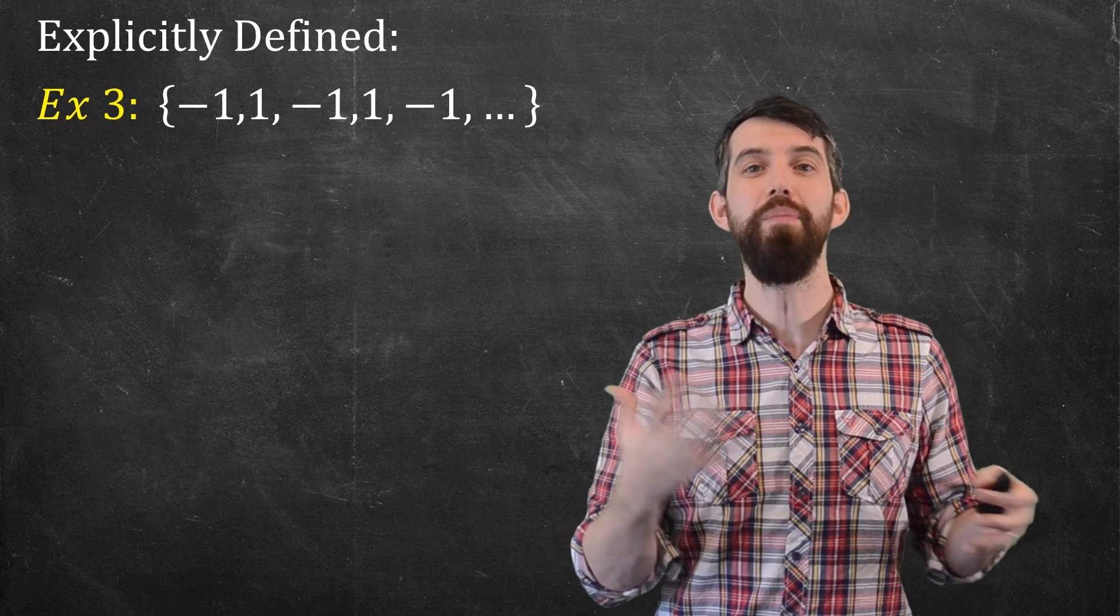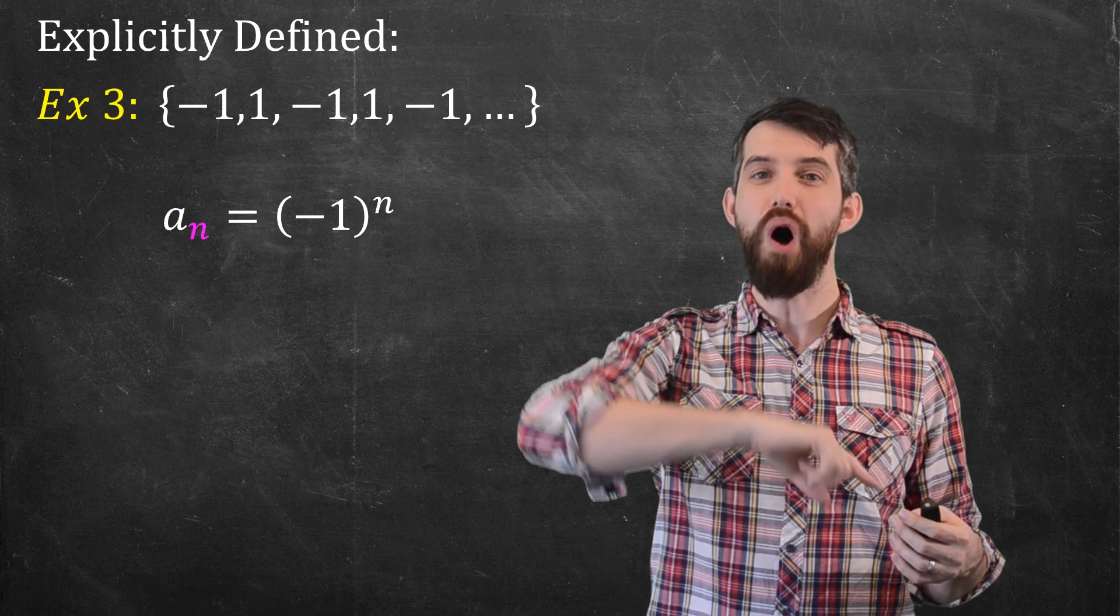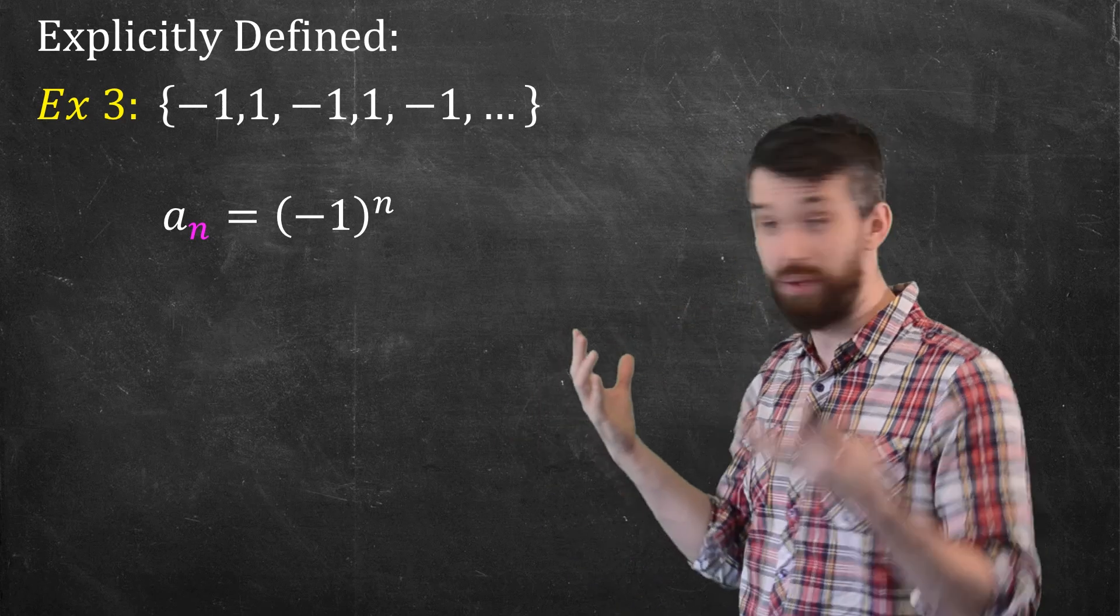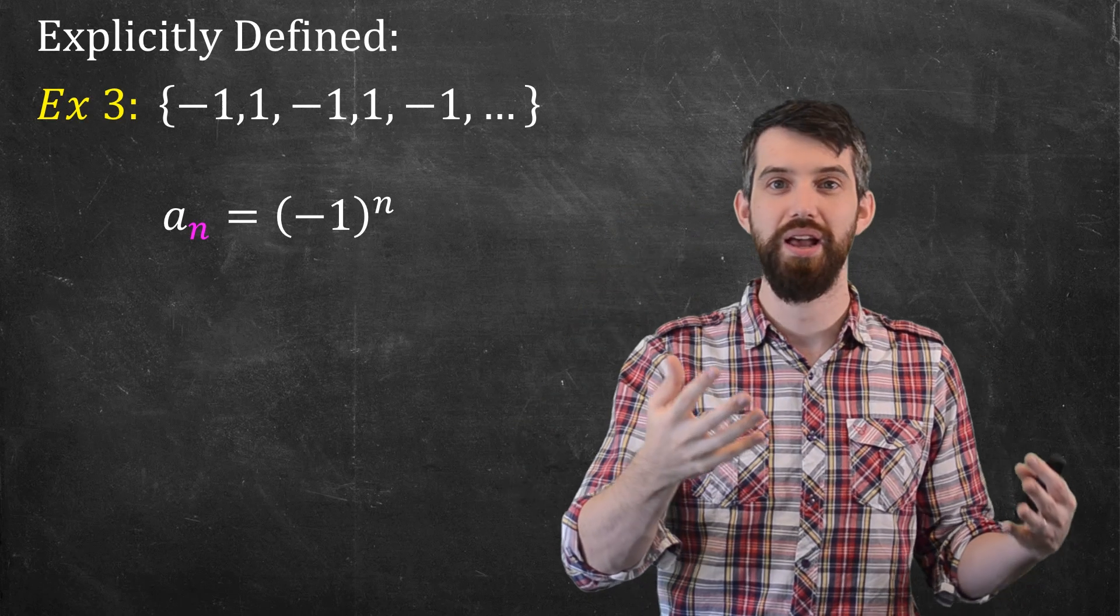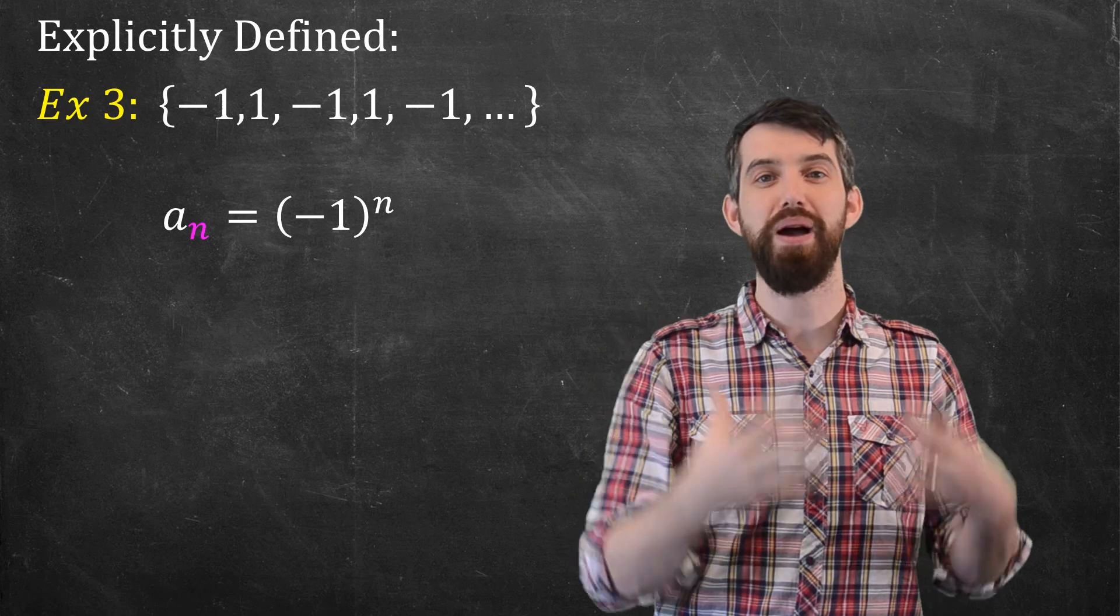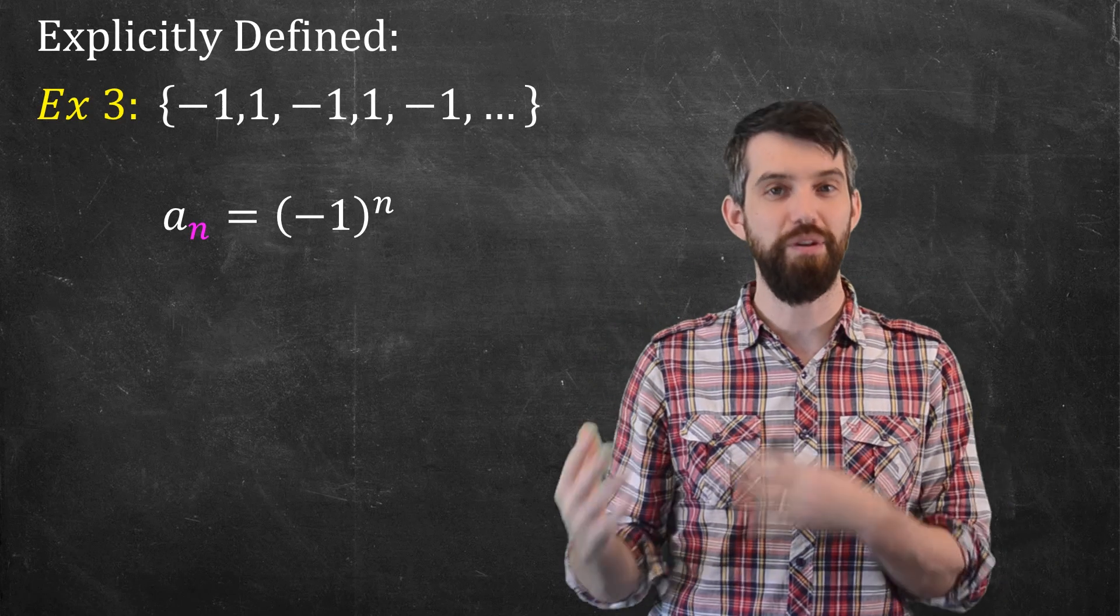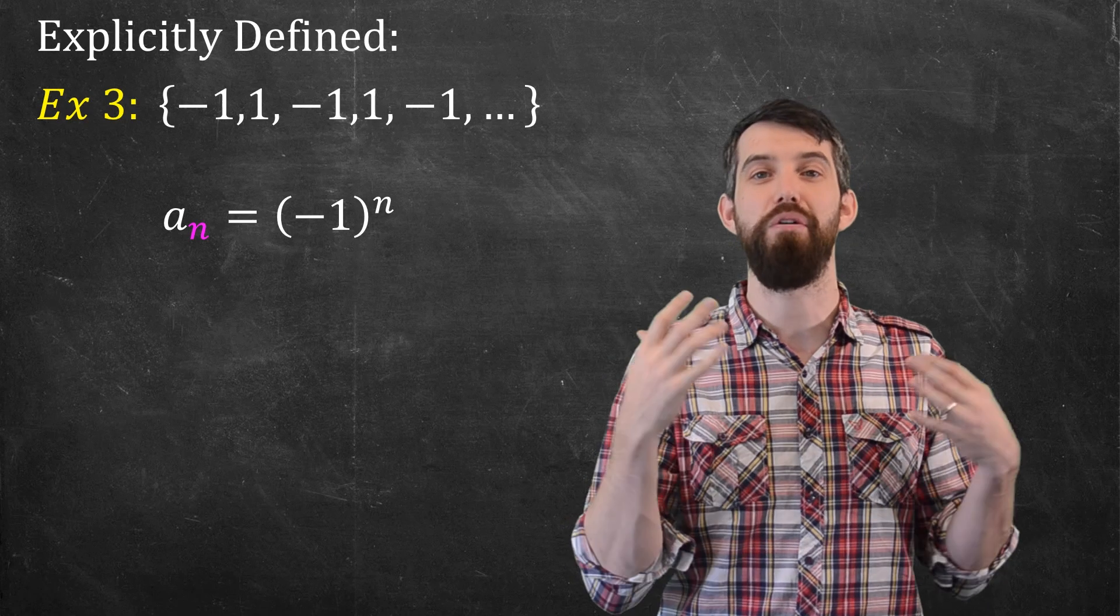So what about this one? Minus 1 to the power of n. For all odd powers of n, like, for example, n equal to 1, minus 1 to the power of 1 is just going to be minus 1. Minus 1 to the power of 3 is minus 1. Minus 1 to the power of 5 is minus 1. But for even powers, it becomes plus 1. Minus 1 squared, to the 4, to the 6. All those are plus 1.